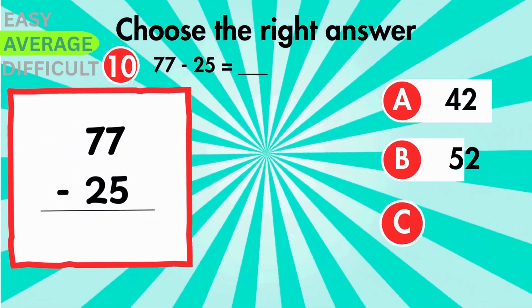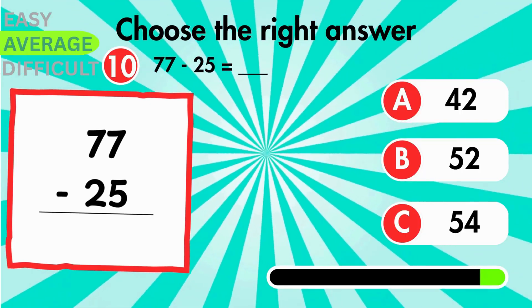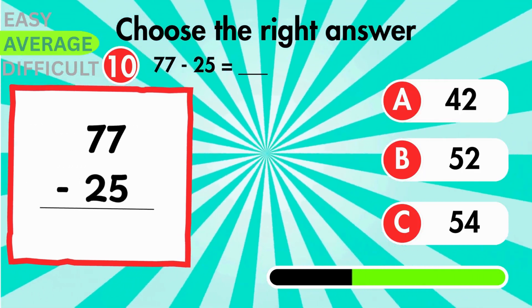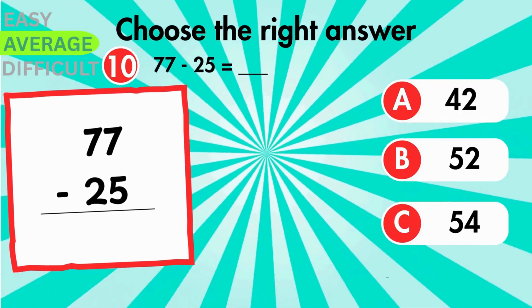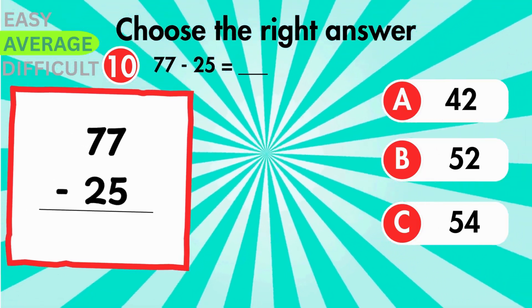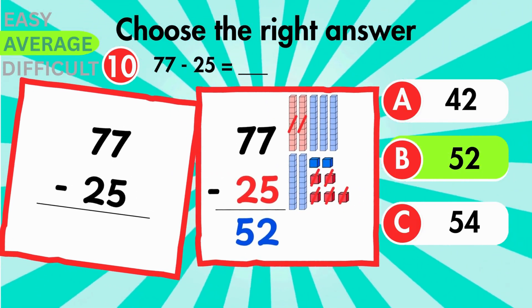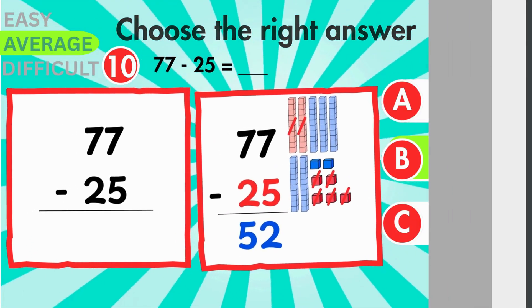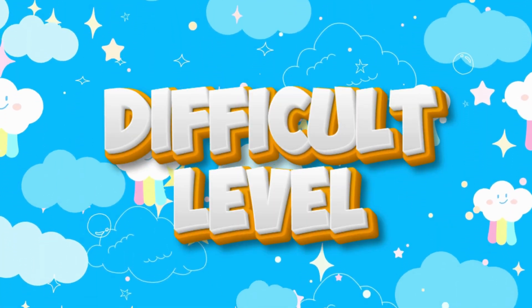How much more is 77 than 25? The difference is 52. Brace yourselves for the difficult level.